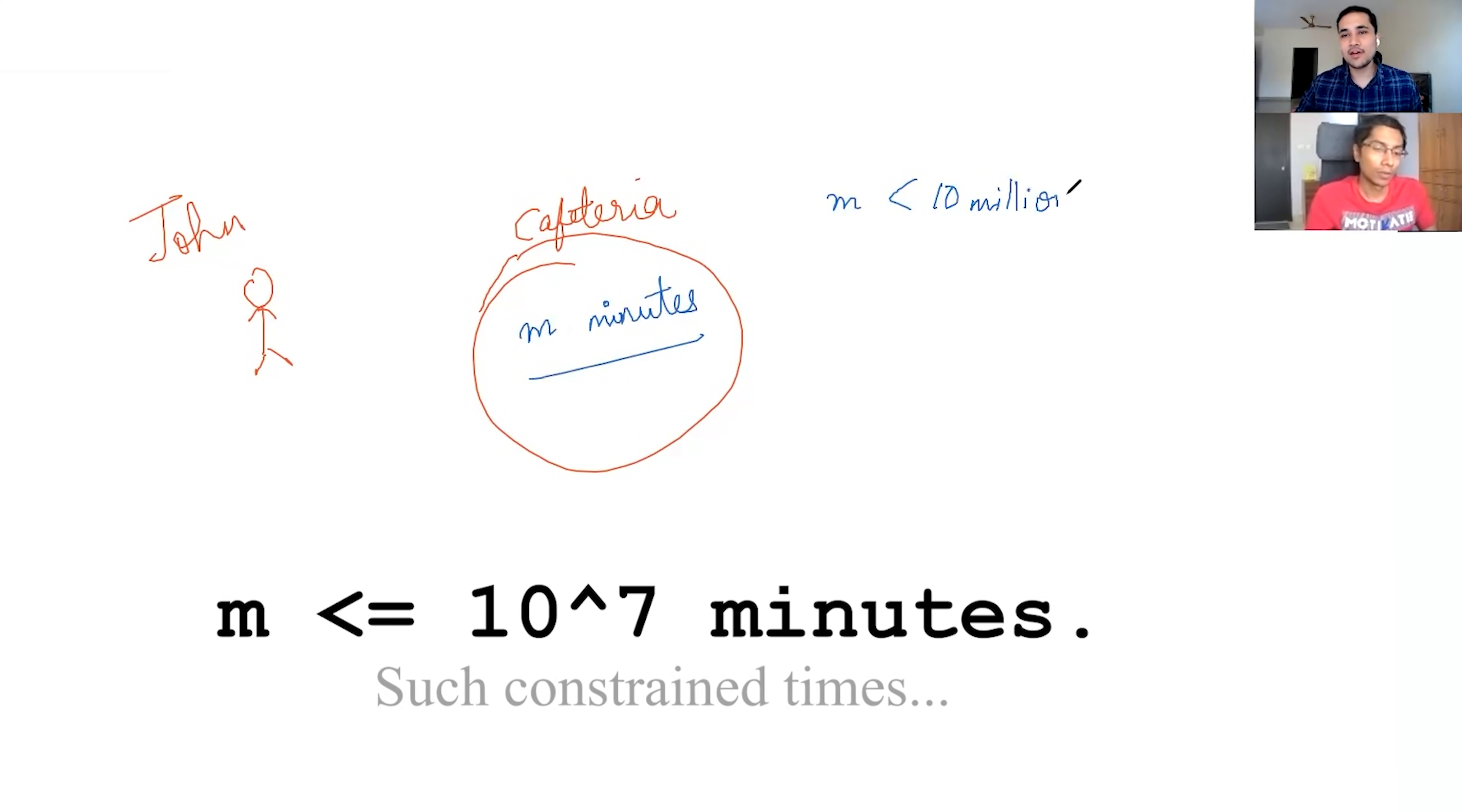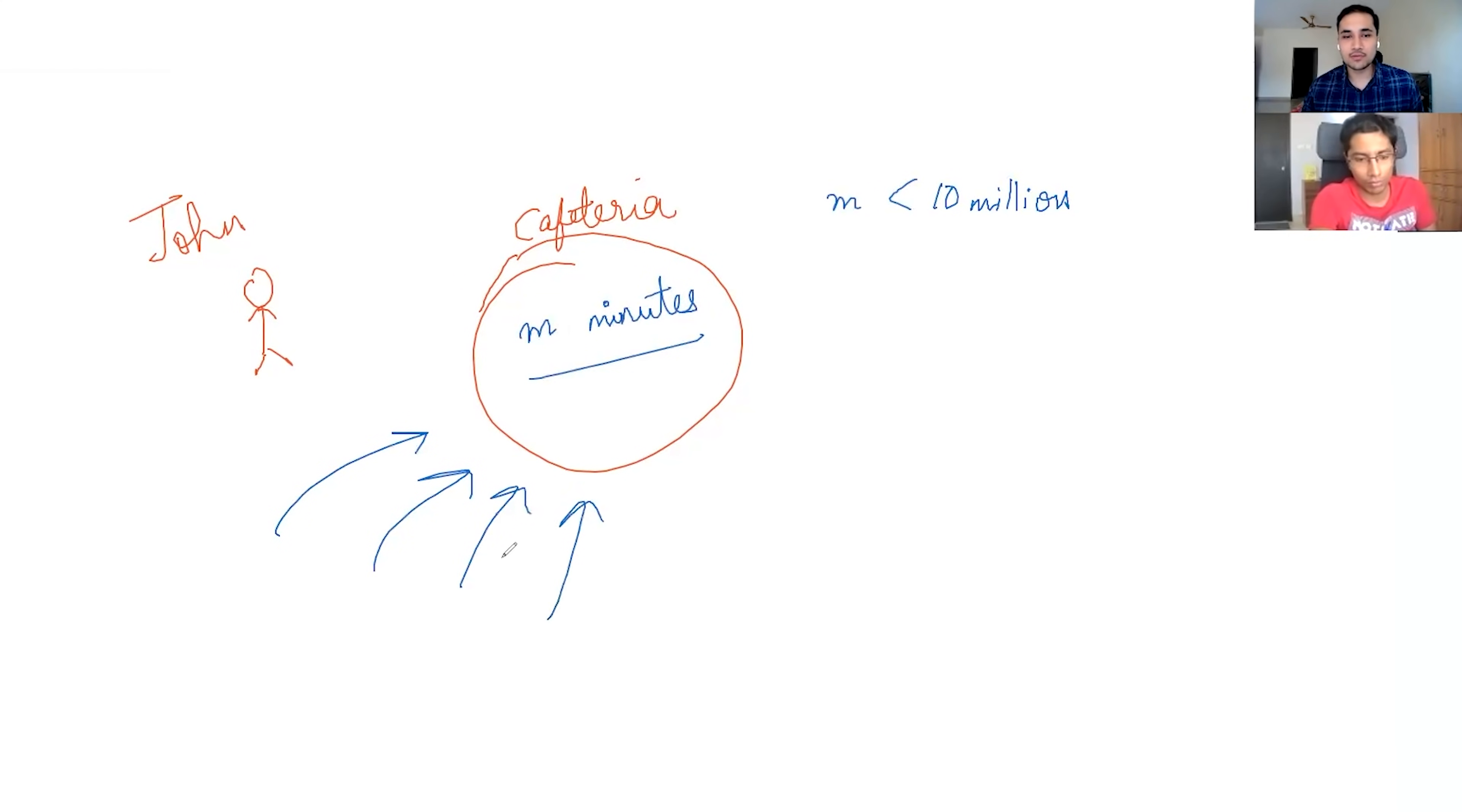So the question for you is basically there is this guy, John. This is his university cafeteria. Obviously he goes there to eat, right? But he also has his exam coming up. So this time he can only spend a very constrained time in the cafeteria and M can be up to 10 million. And he already knows the schedule of his friends, like when they will be coming to the cafeteria. A schedule for some friend means that the ith friend will come at time Ti and then he will spend a duration Di in the cafeteria. And you have to tell me what are the maximum number of friends John can meet given that he cannot spend more than M minutes in the cafeteria.